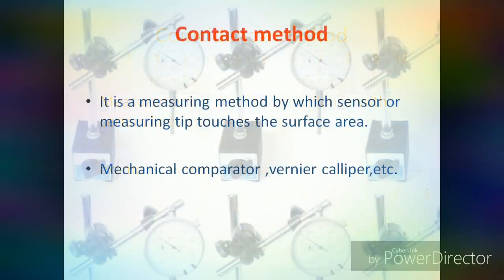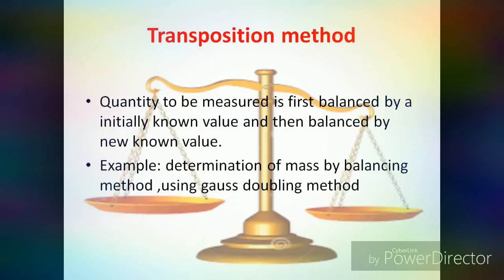The next method is the Contact Method. It is a measurement method by which a sensor or measuring tape touches the surface area. Example: mechanical comparator, vernier caliper, etc. Most measurement devices are based on the contact method only.